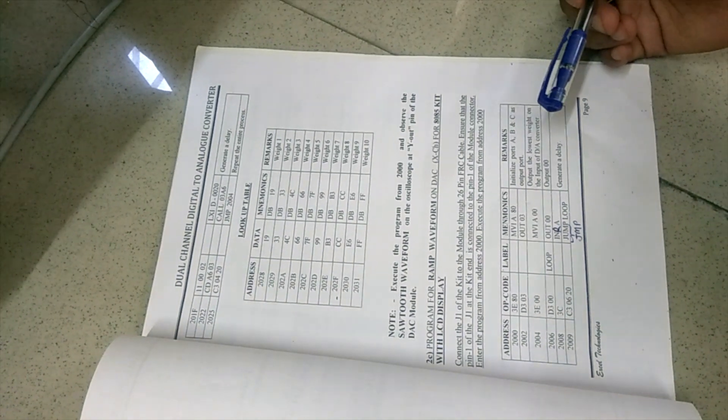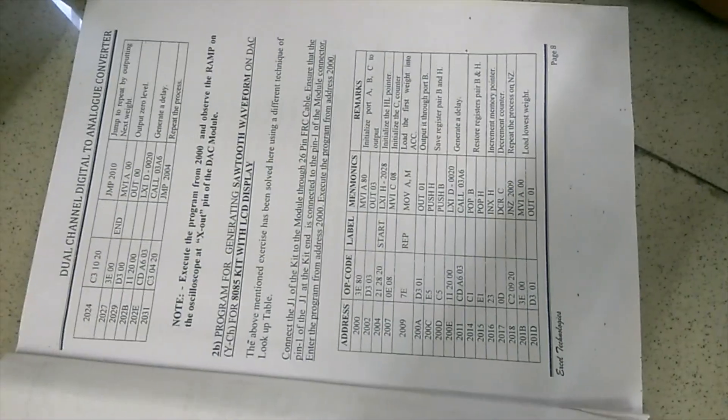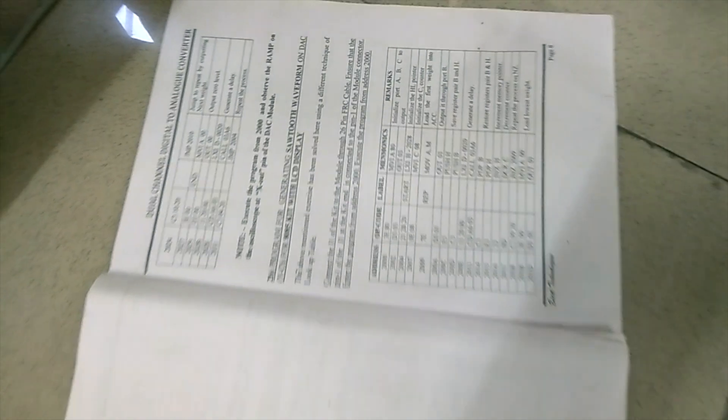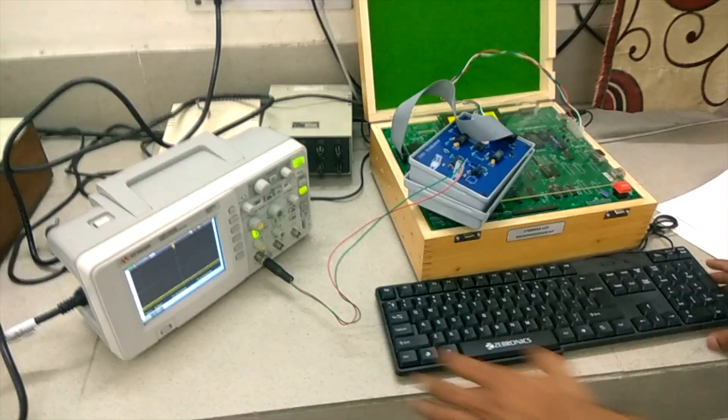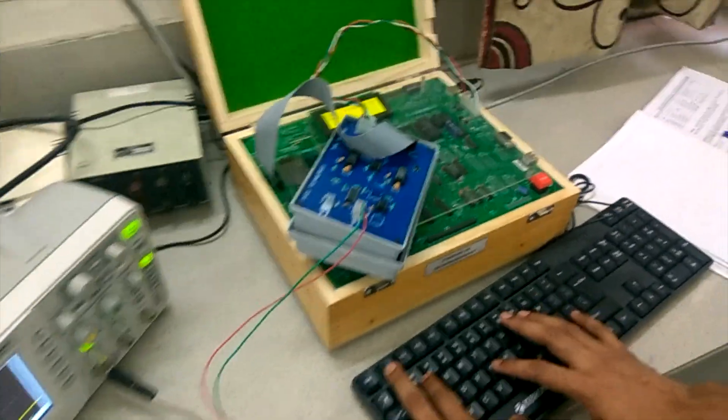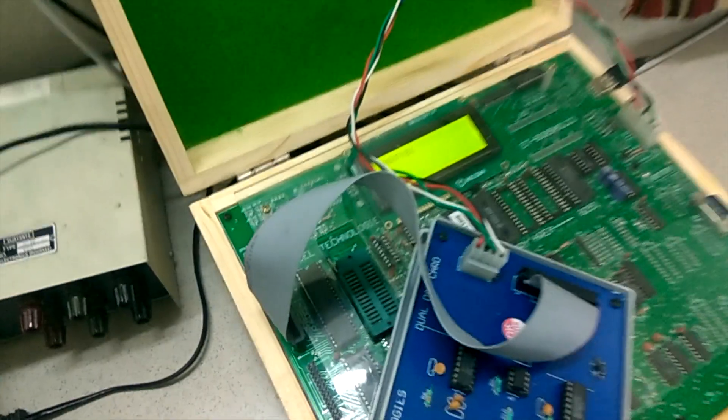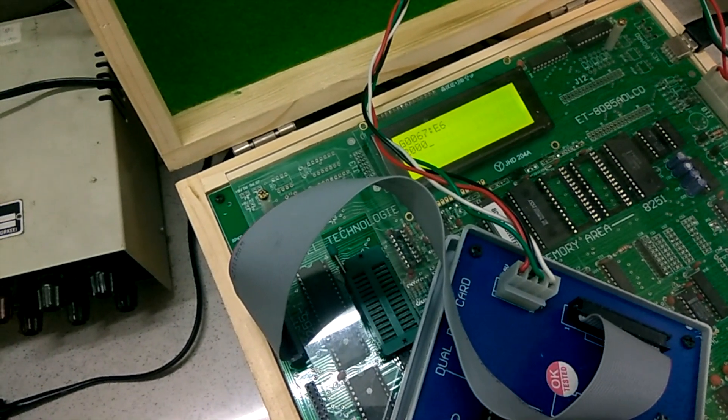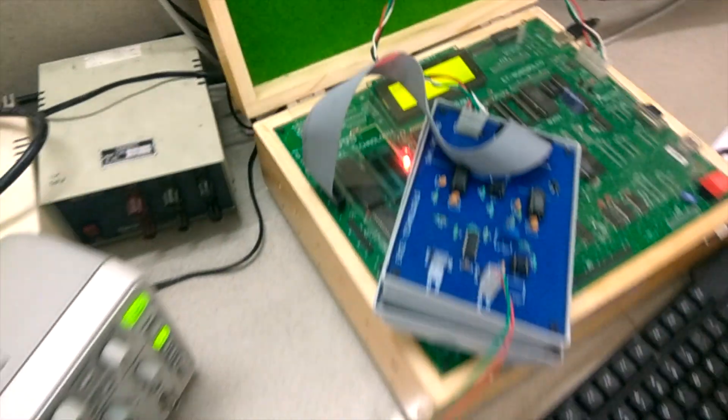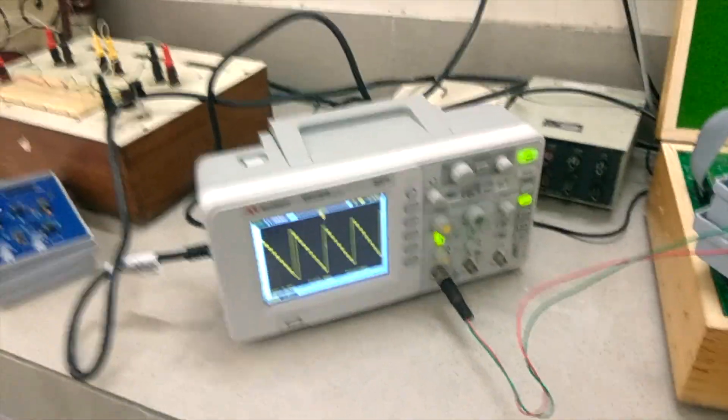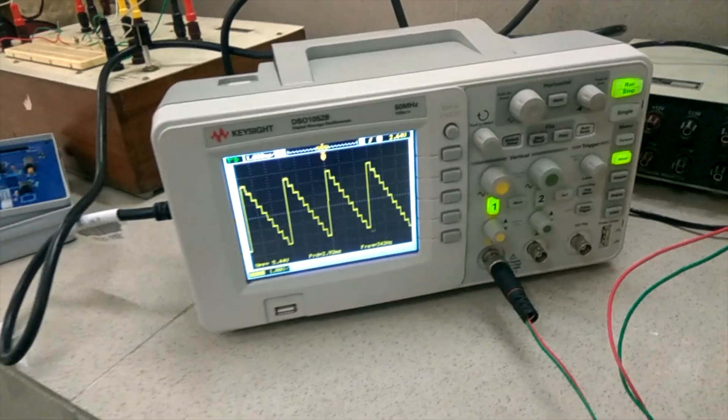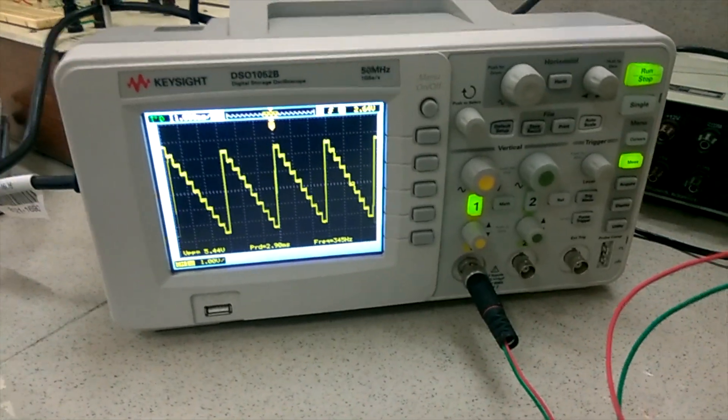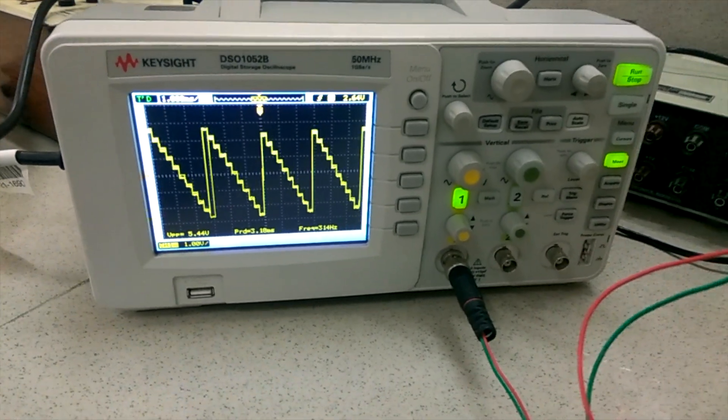I will show you the actual code working on the 8085 microprocessor. I will be executing the mnemonic I previously entered using the G2000 command. As you can see the program is executing. We can see that the analog output, the sawtooth waveform, is generated on the oscilloscope.